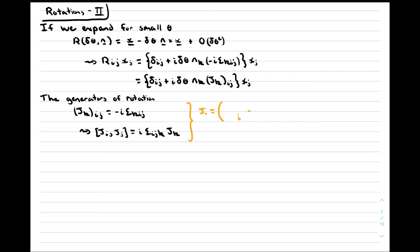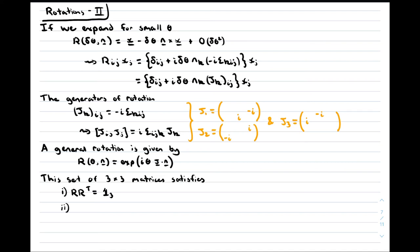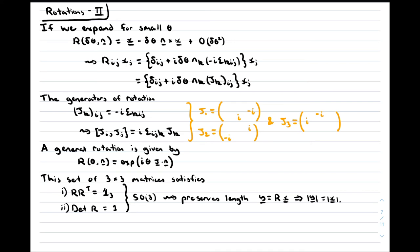The three generators are the 3x3 matrices shown on screen, and we will identify these with the operators of angular momentum in QFT. For larger angle rotations, we can find any rotation by taking the exponential of the parameters multiplied by the generators. The set of 3x3 matrices given by this formula can be shown to have two important properties: firstly, the matrices are orthogonal, meaning their transpose is their inverse; secondly, the determinant of all the matrices is 1. The group of rotations is usually referred to as the 3-dimensional special orthogonal group, or SO(3), where the S stands for unit determinant. An important property of rotations is that it preserves the length of the vector x. Reflections also preserve the length of the vector, so you must include the restriction to unit determinant in order to get rotations, and this completely specifies the group.